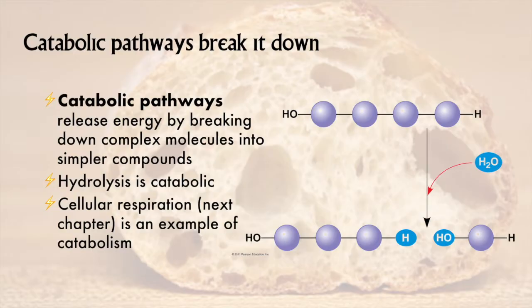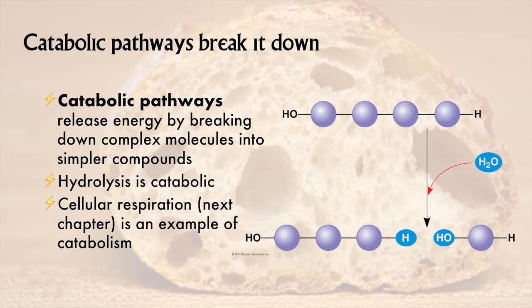We can divide metabolic pathways into two categories: those that build up and those that break down. Those that break down are called catabolic pathways. Breaking down of complex molecules into simpler ones releases energy. We've seen examples of catabolism back in chapter 5 — hydrolysis, the process of removing monomers from polymers by adding in water. Cellular respiration, which is the subject of the next chapter, is another example of a catabolic pathway.